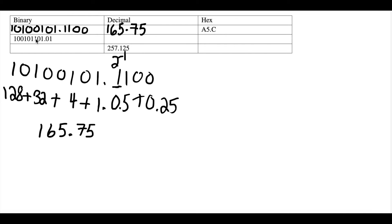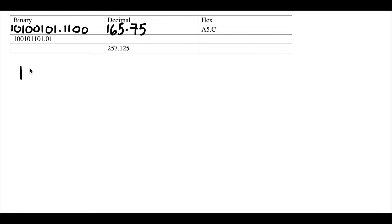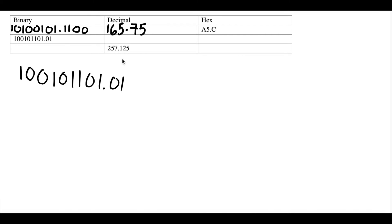So now we're going to start with this binary number and do the second row. We have the binary number 100101101.01. We just did binary to decimal, so if you can take two minutes to pause the video and try it yourself first, then you can match answers with me to see if the process you used was correct — just to work on your own skills and develop them.